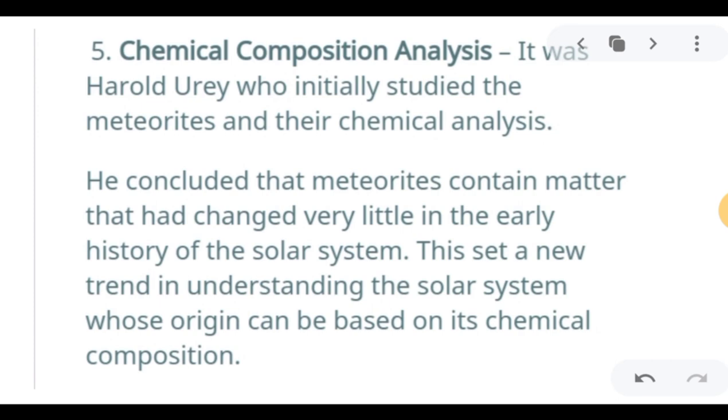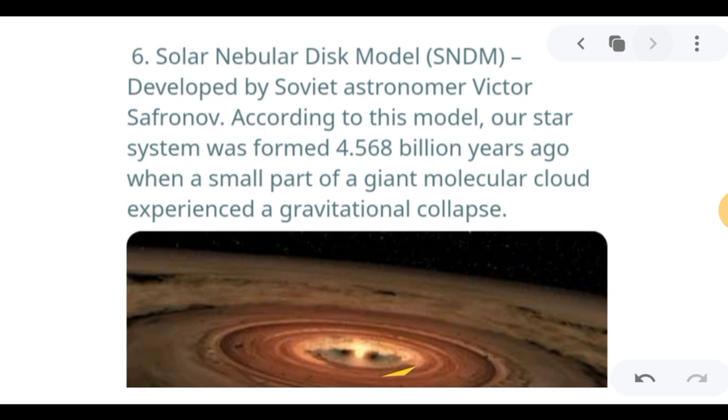For the chemical composition analysis, it was Harold Urey who initially studied the meteorites and their chemical analysis. He concluded that meteorites contain matter that has changed very little in the early history of the solar system. These findings set a new trend in understanding the solar system, whose origin can be based on its chemical composition. In this era, they based their studies on chemical composition. When studying meteorites, they searched for meteorites from distant parts of the solar system and then analyzed its composition and compared it to other meteorites.